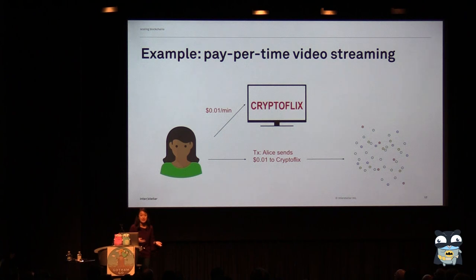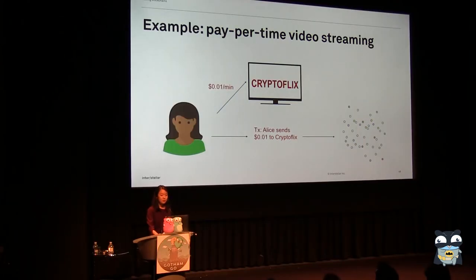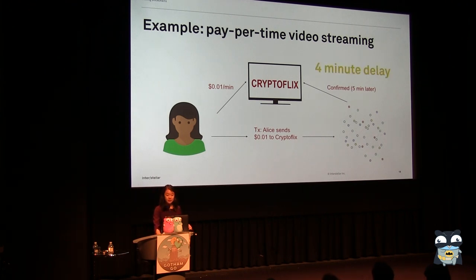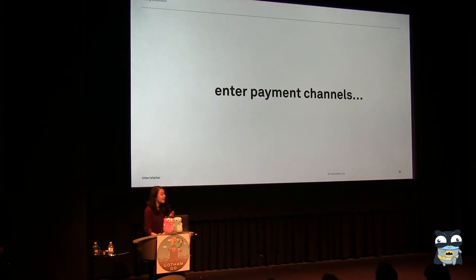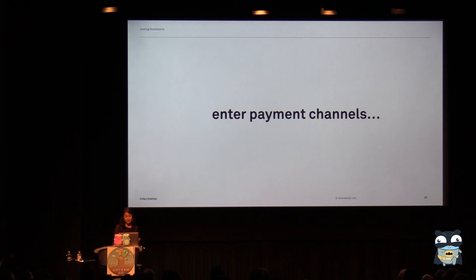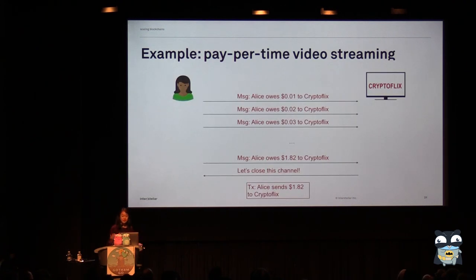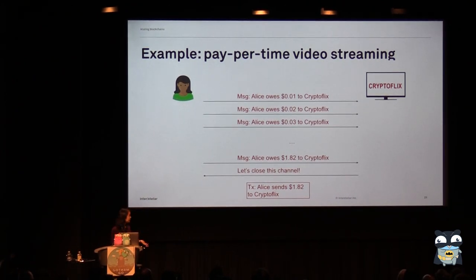Of course, on this network it takes five minutes to confirm, so Alice has four minutes in which to watch content and not pay me, which I am very unhappy about. So I decide to implement this with payment channels. The most basic way is that every minute, Alice sends me a message that she owes me one more cent.